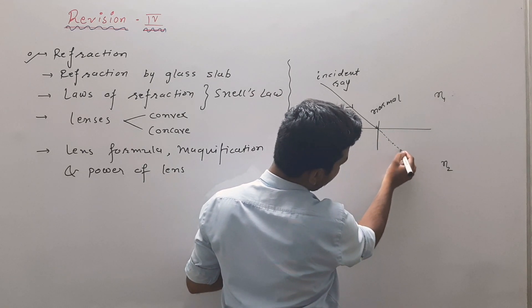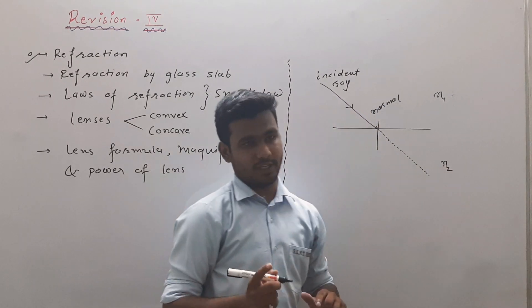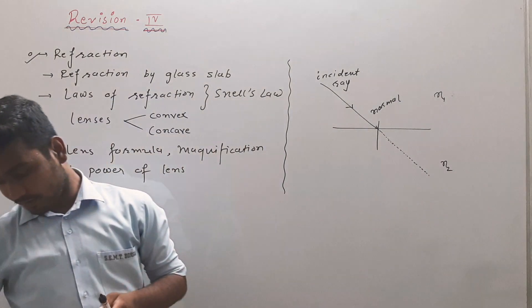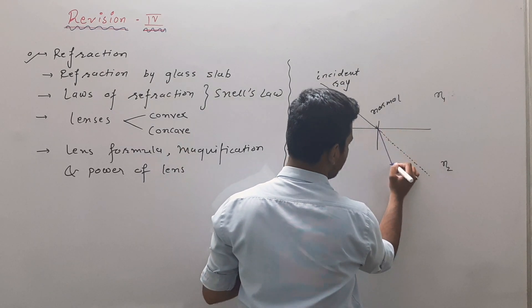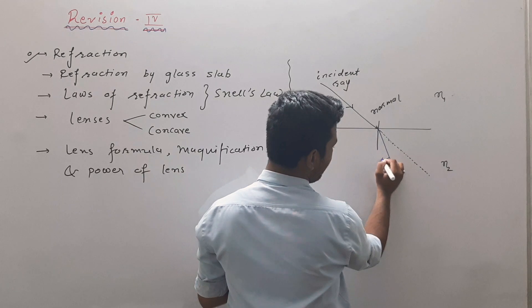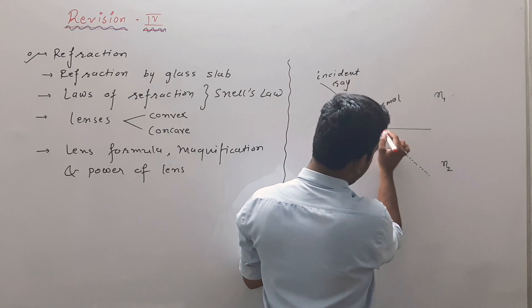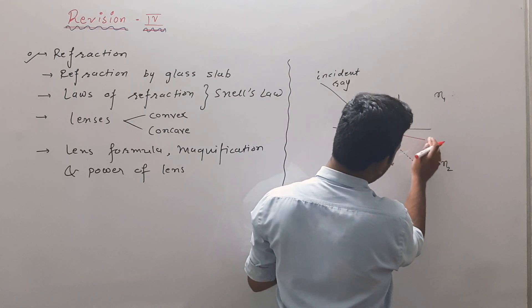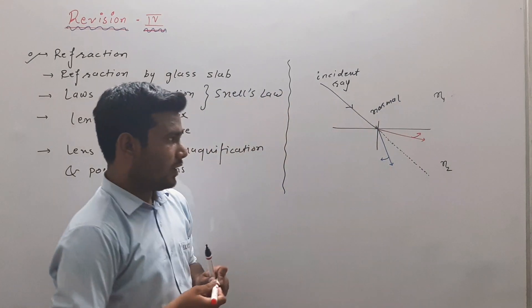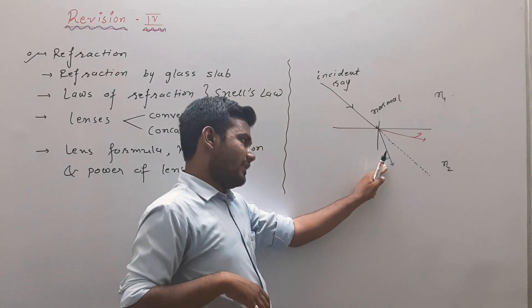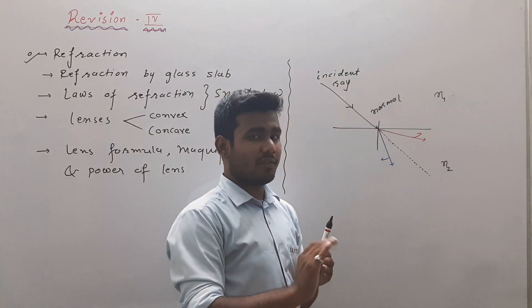This is its original direction without any change. When light changes its direction, there are two possibilities: it can move towards the normal, or it can move away from the normal. The refracted ray can move towards the normal — that is the first possibility. And another possibility is it can go away from the normal. In both cases it changes its direction.